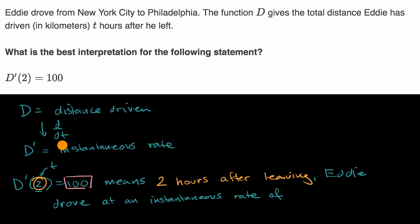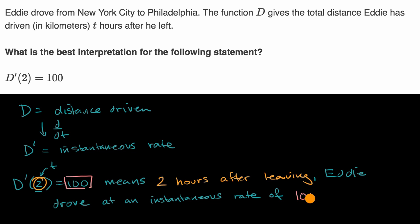And what are the units? Well, the distance was given in kilometers, and now we're thinking about kilometers per unit time — kilometers per hour. So this is 100 kilometers per hour. That's the interpretation there.